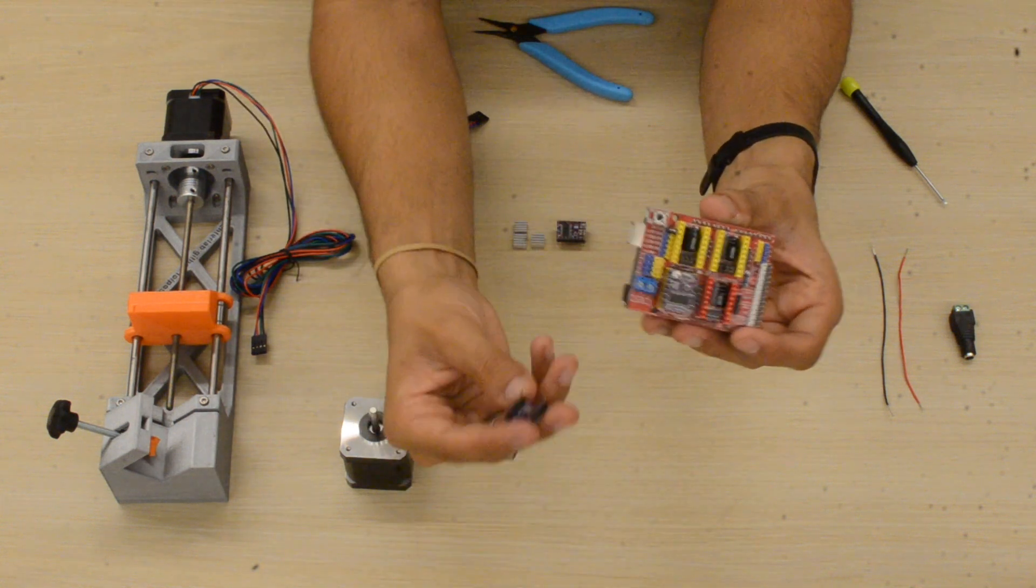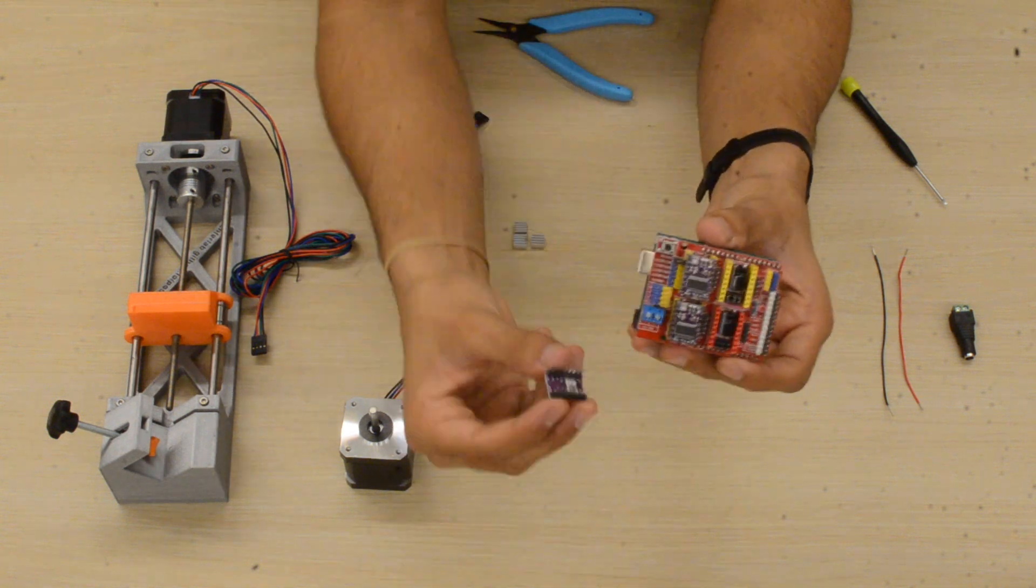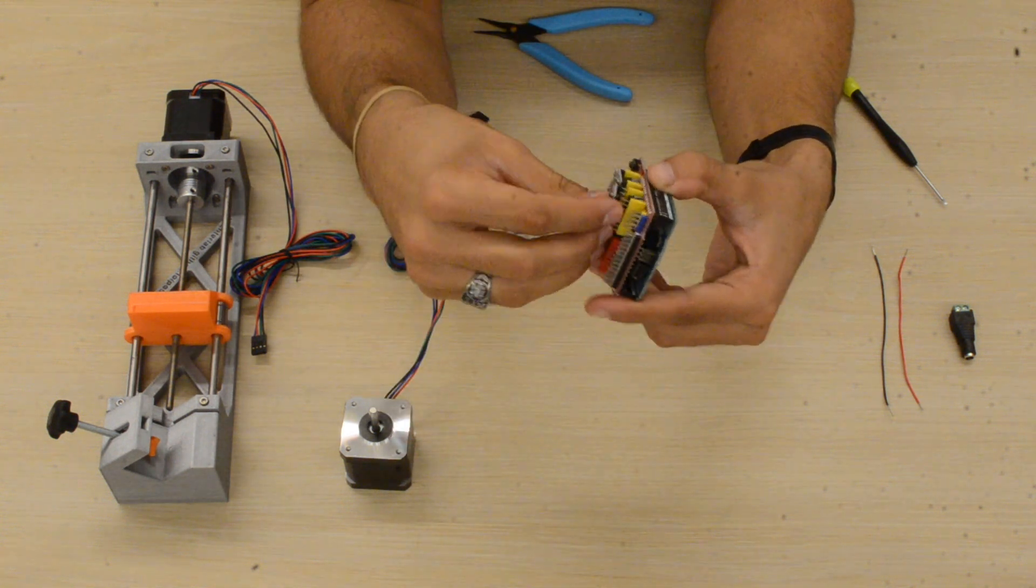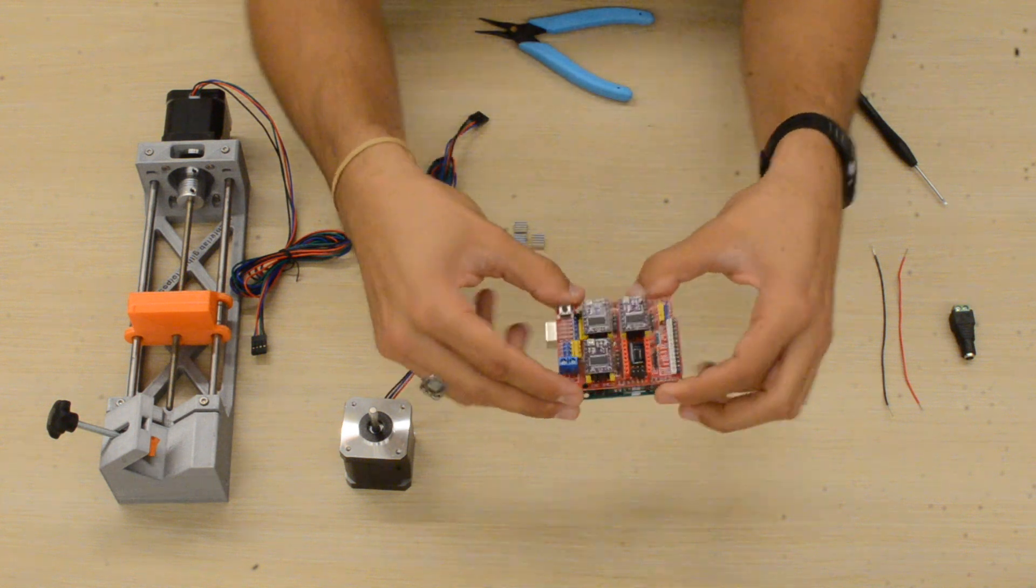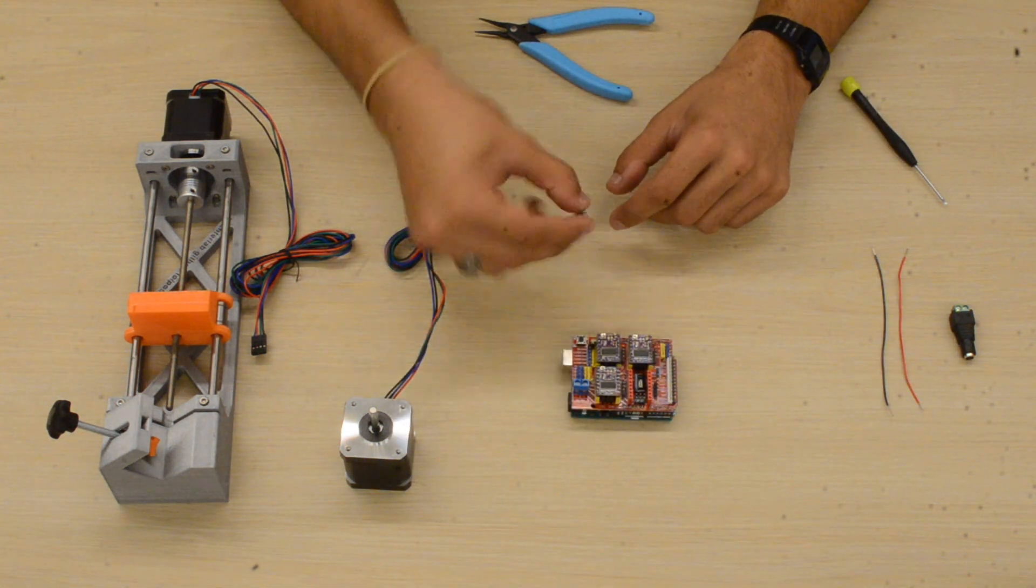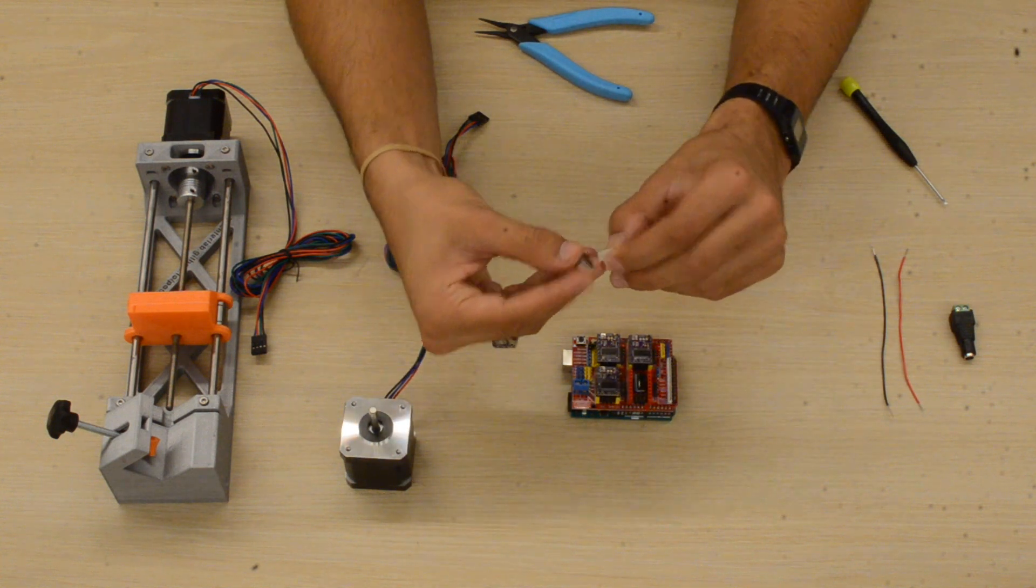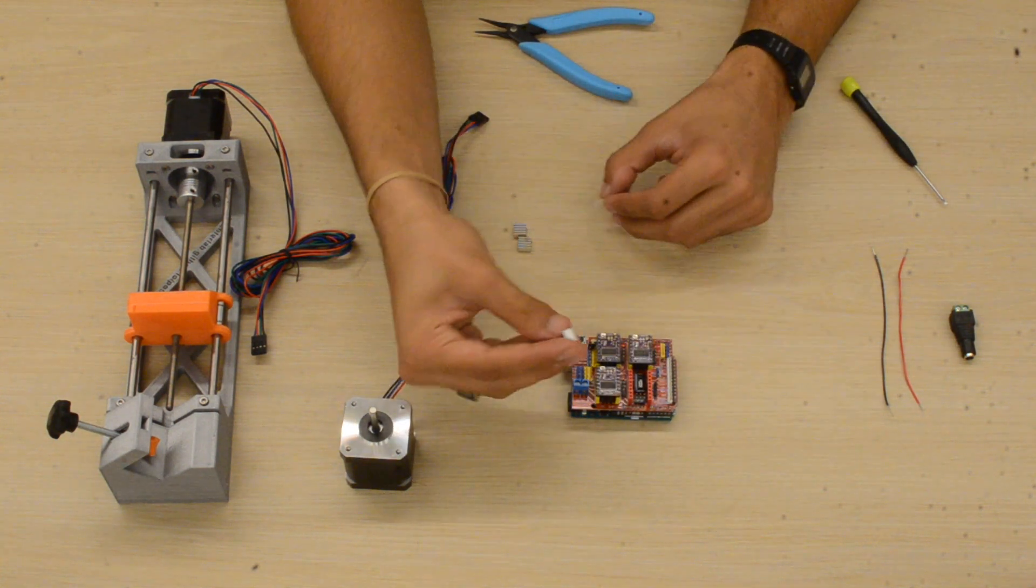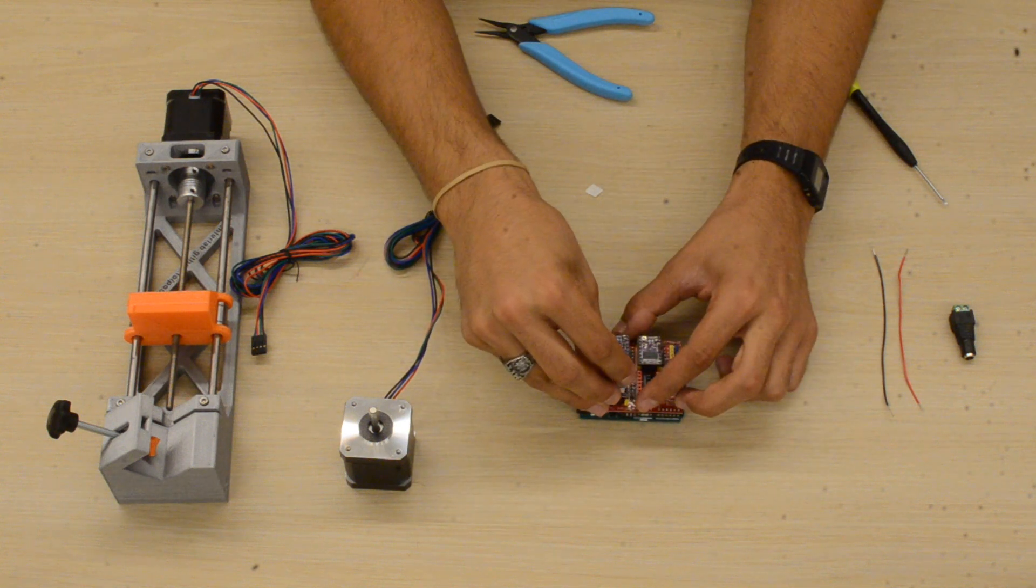We'll do that for all three of them. Once that's done, we'll take these little metal pieces known as heat sinks. Peel off the plastic and place them on the CNC driver. What they do is draw heat away from the chip so when you're running it, it doesn't get super hot.